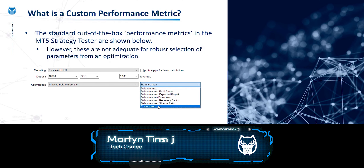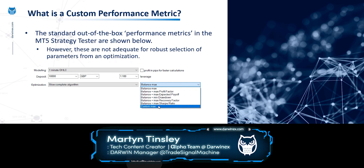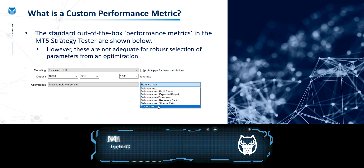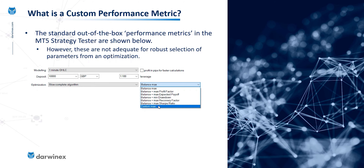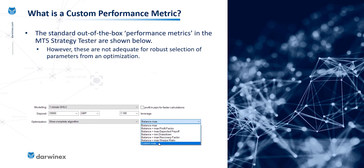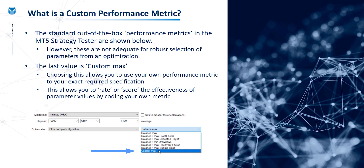Let's take a look at what a custom performance metric is. You're probably already aware of the standard out-of-the-box performance metrics in the MT5 strategy tester, shown in the image below. However, these aren't really adequate if we're going to undertake a really robust selection of parameters from our optimization. That's where the final option comes in — the custom max — which allows you to use your own performance metric to your own exact required specification, and rate or score the effectiveness of each parameter set by coding your own metric.